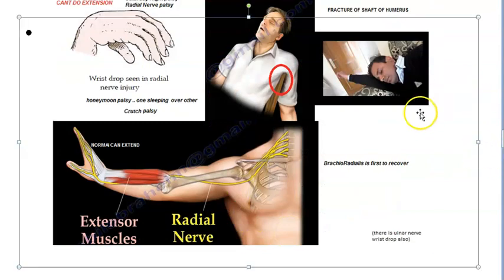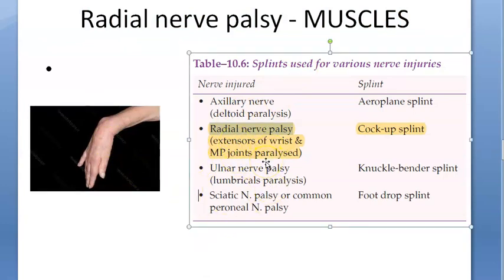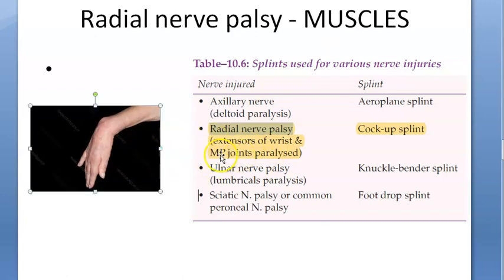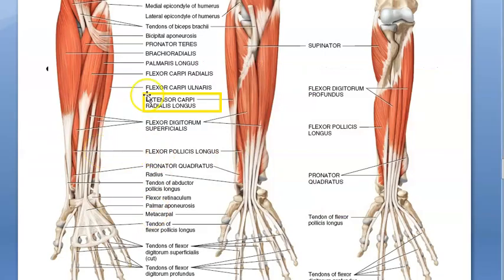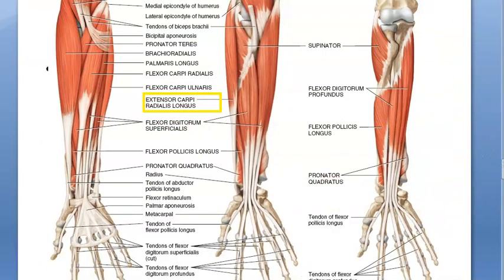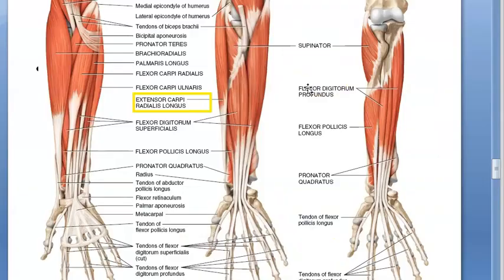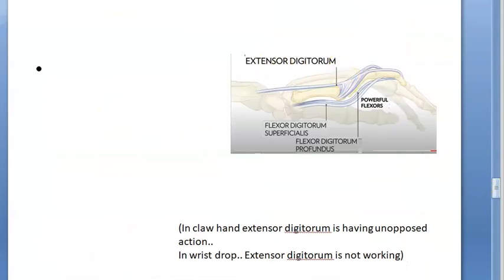The muscles affected in radial nerve palsy are the extensors of the wrist, which is why the wrist is in flexion. The metacarpophalangeal joints are also affected. Specifically, extensor carpi radialis longus and extensor digitorum are impaired — extensor digitorum is supposed to extend the metacarpophalangeal joints, but it is not working, so they remain flexed.